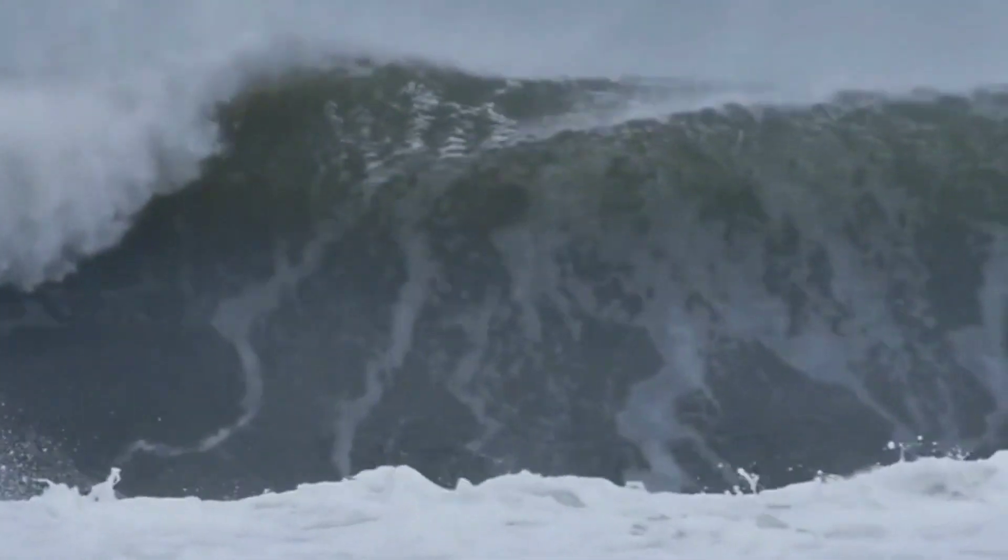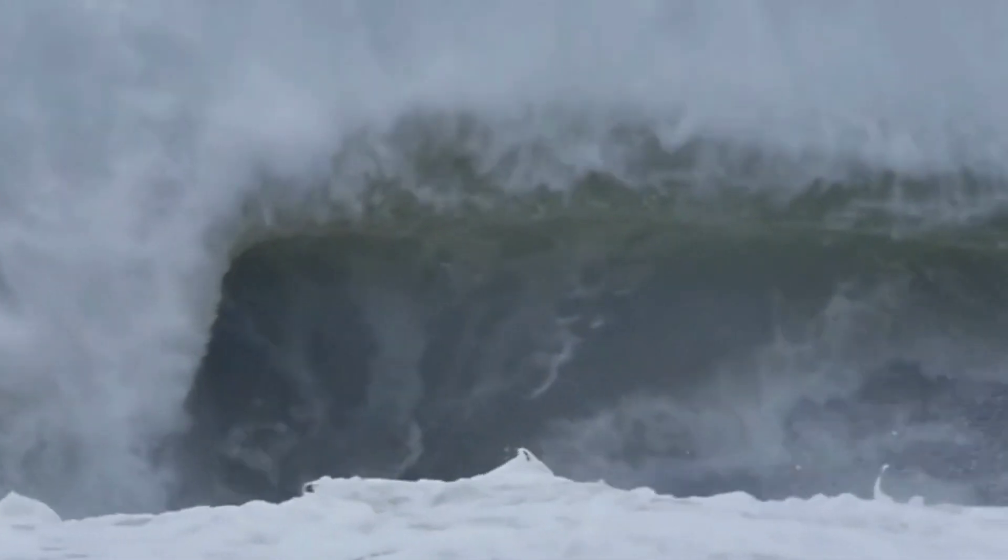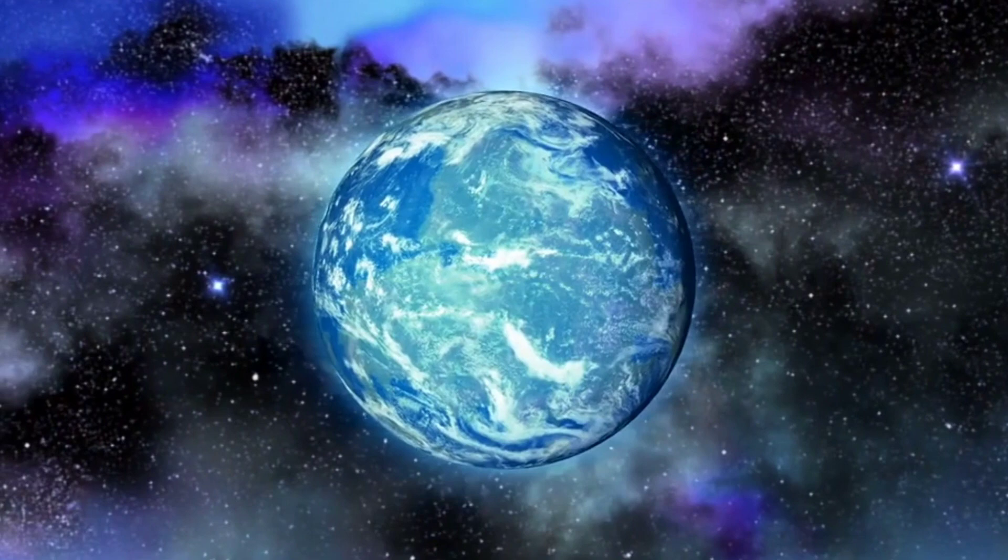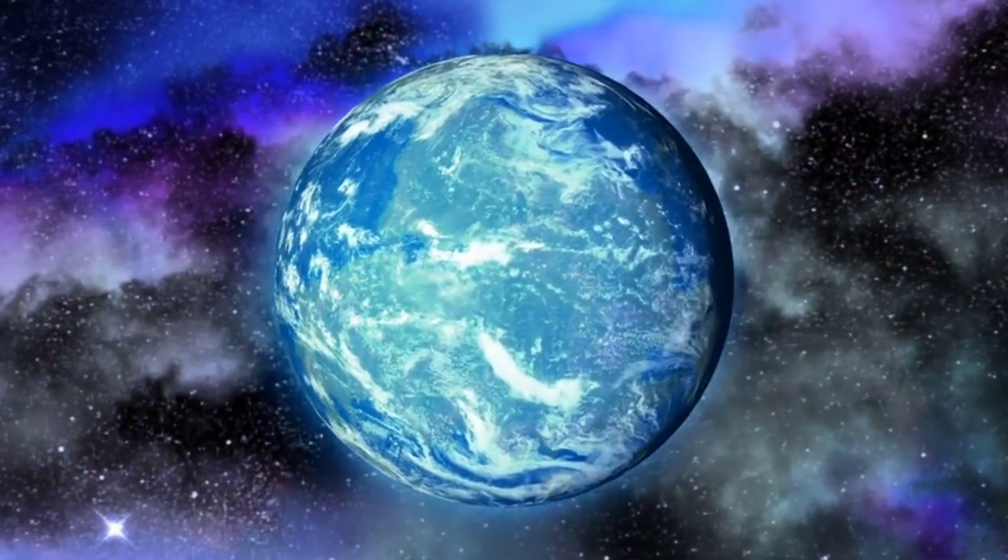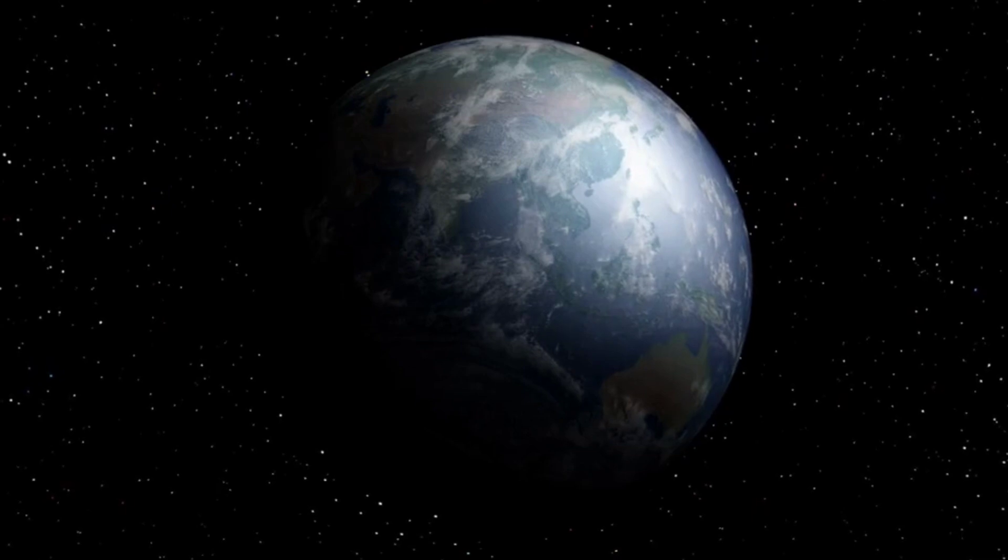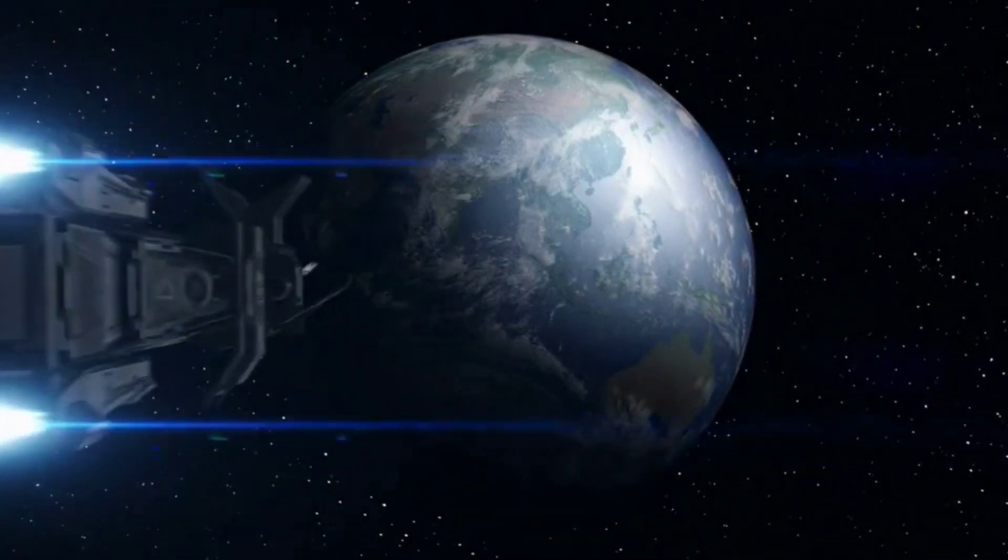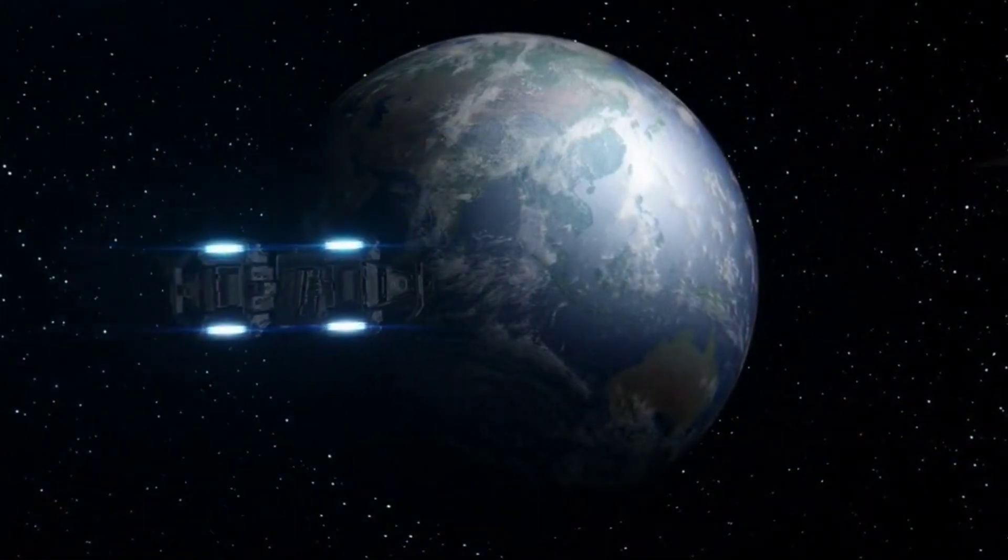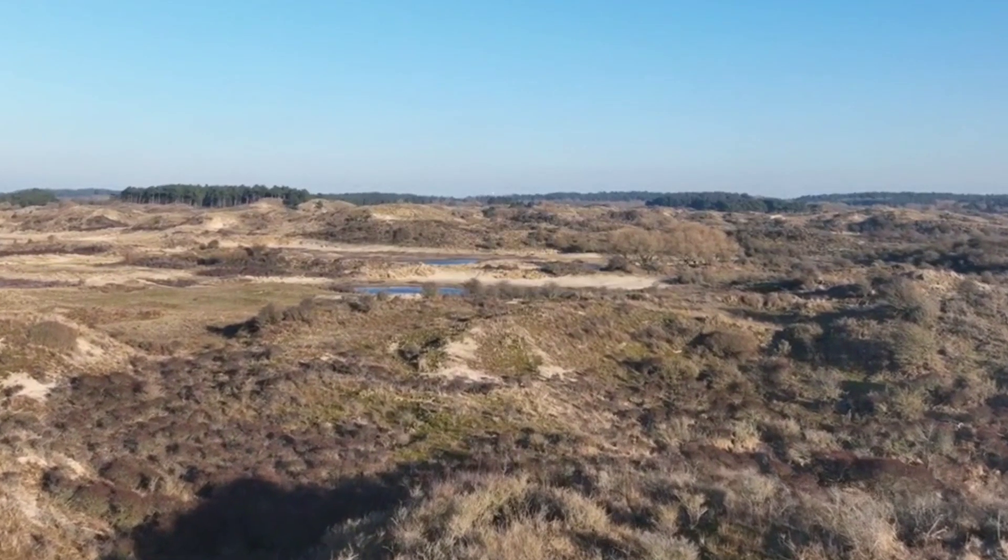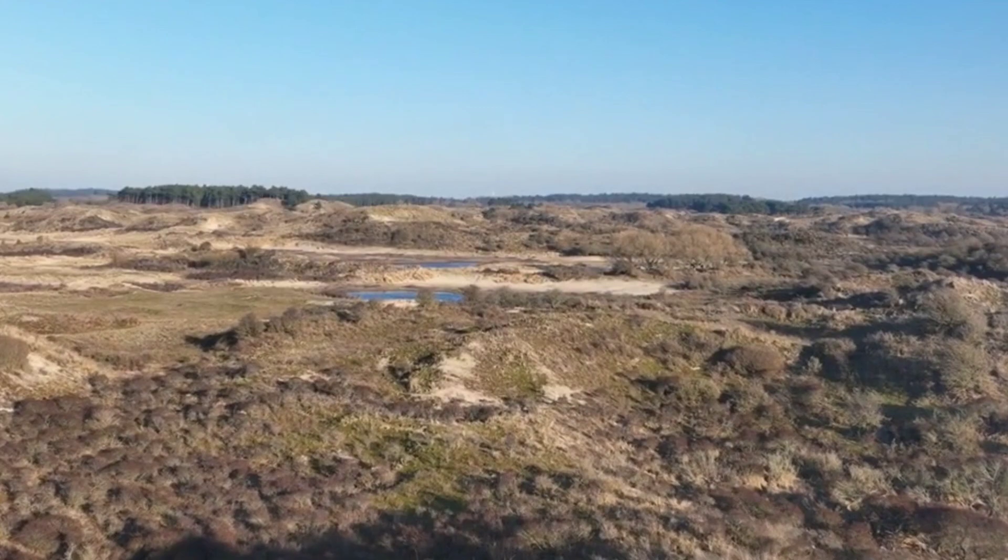One of the most striking consequences of the ancient moon's closer proximity was the effect it had on the earth's tides. As the moon orbited closer to our planet, its gravitational pull on the oceans was significantly stronger. This led to dramatically amplified tidal forces, causing higher tides that swept across the earth's coasts. These powerful tides sculpted the shorelines and influenced the evolution of marine ecosystems.